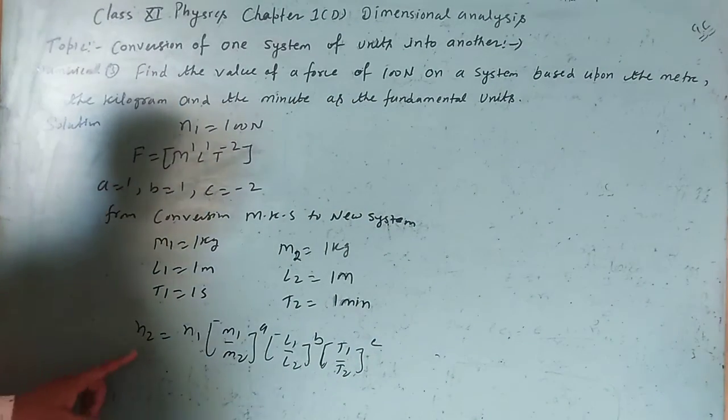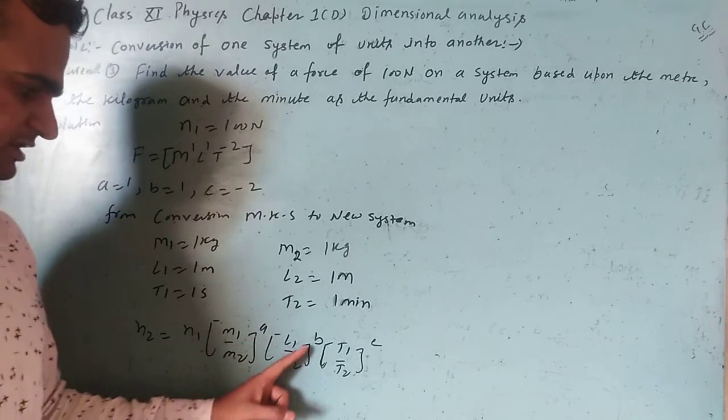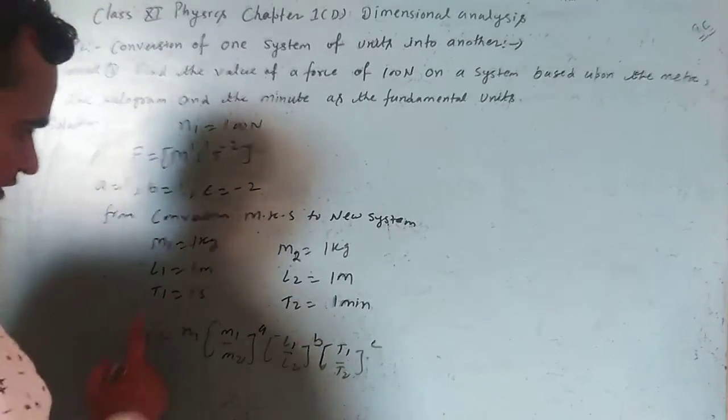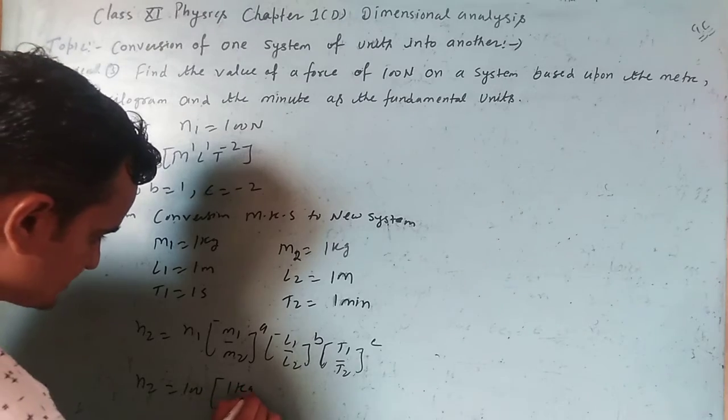Now using the formula: n2 = n1 × (M1/M2)^a × (L1/L2)^b × (T1/T2)^c. Substituting values: n2 = 100 × (1 kg / 1 kg)^1